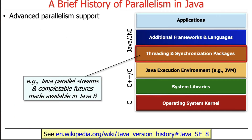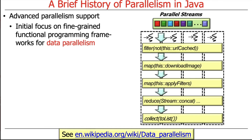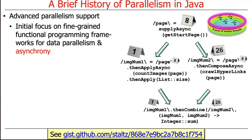To address those issues, modern Java — starting with Java 8 — introduced parallel streams and completable futures. Parallel streams focus on fine-grained functional programming frameworks for data parallelism, giving you the benefits of the fork join pool model but with a functional programming veneer wrapped around it. Completable futures add support for asynchronous parallel processing, which is a different model altogether.